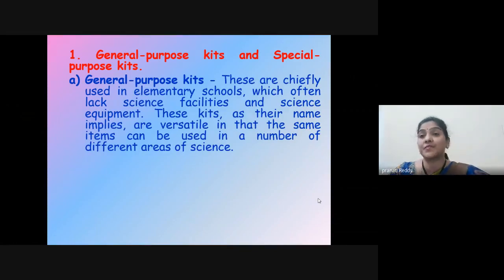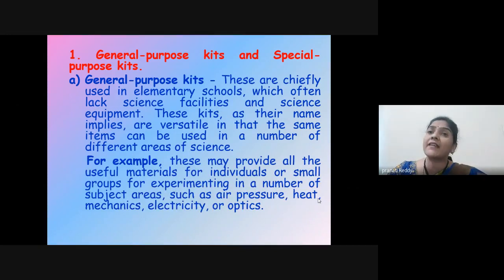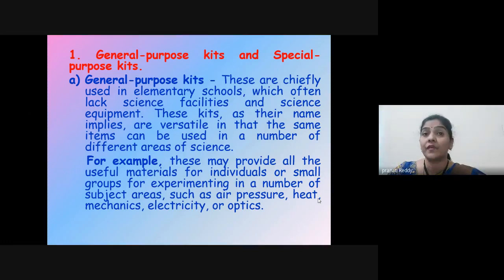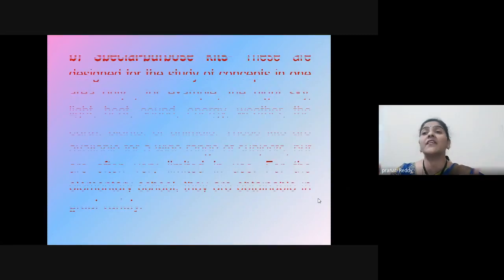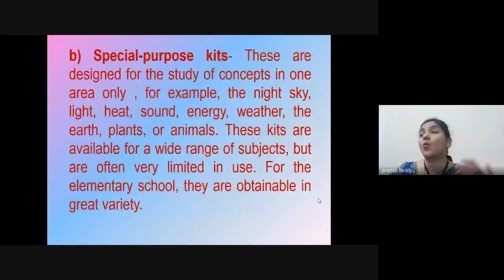General purpose kits are chiefly used in elementary schools, which often lack science facilities and equipment. These kits are versatile in that the same items can be used in a number of different areas of science. A general purpose kit, for example, may provide all the useful materials for individuals or small groups for experimenting in subject areas such as air pressure, heat, mechanics, electricity, or optics. For an activity in electricity, items such as dry cell, wire, a doorbell, a push button, and switch can be selected from a general purpose kit.